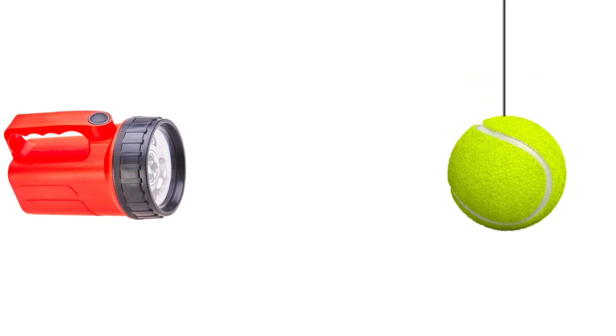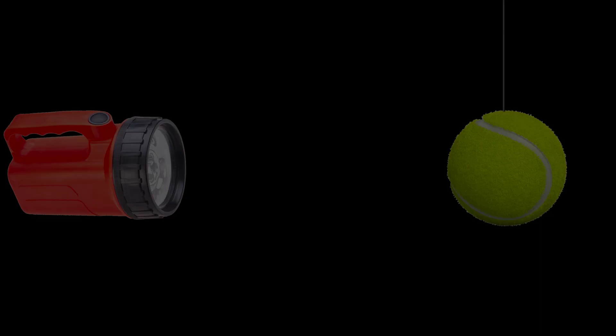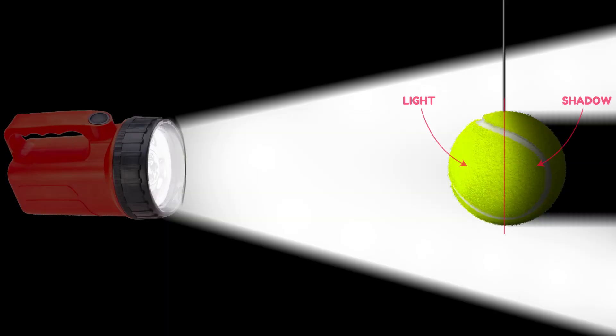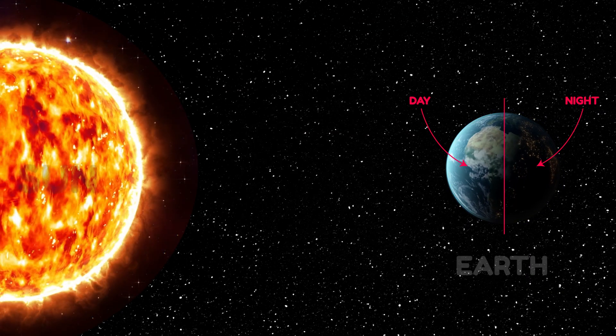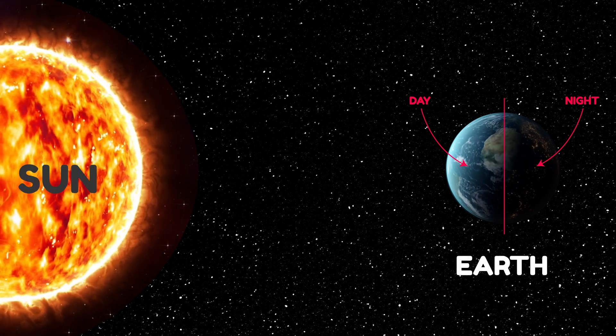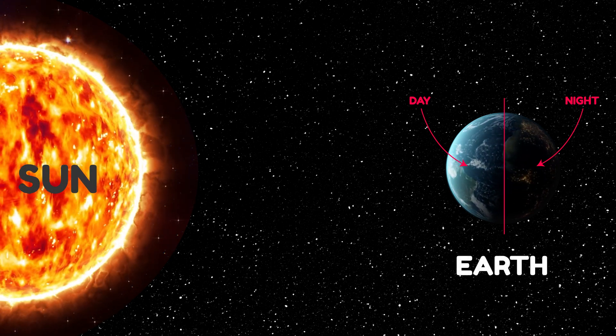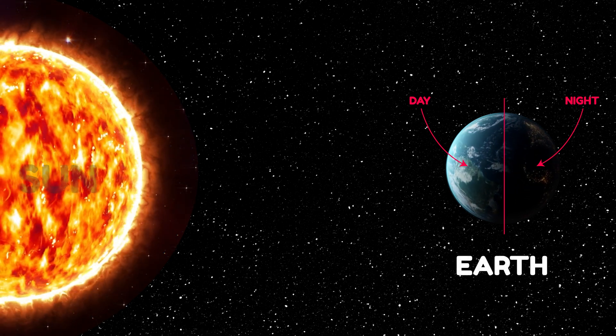Let's have a look at this tennis ball and flashlight. The light from the flashlight only lights up one side of the ball, and the other side is in shadow. That's exactly how it is when the sun lights the Earth. The part that's lit up is day, and the part in shadow is night.